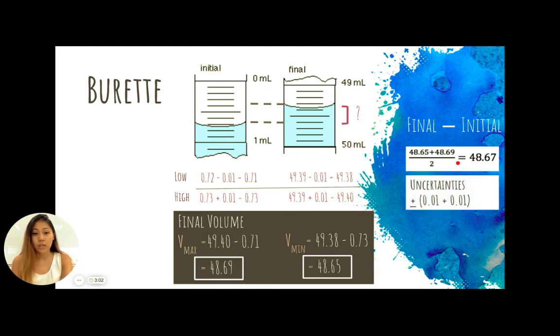The uncertainty, then we add them up together. Again, uncertainties with any addition or subtraction, you always add up the uncertainties. So even when you're subtracting uncertainties, this doesn't mean that you subtract the uncertainties, you add them together. So the two uncertainties we have are 0.01 in both cases. So this gives us a final value of 48.67 plus or minus 0.02.